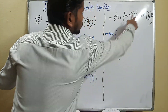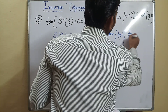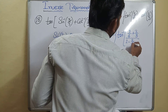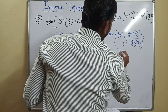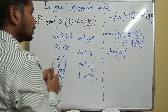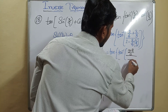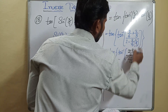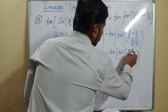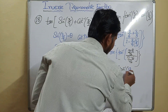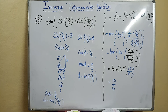It becomes tan of tan inverse of (3/4 + 2/3) / (1 − 3/4 × 2/3). The LCM of 4 and 3 is 12: numerator is 9/12 + 8/12 = 17/12. Denominator: 1 − 6/12 = 1 − 1/2 = 6/12 = 1/2. So (17/12)/(1/2) = 17/6. Therefore the answer is tan of tan inverse of 17/6 = 17/6.